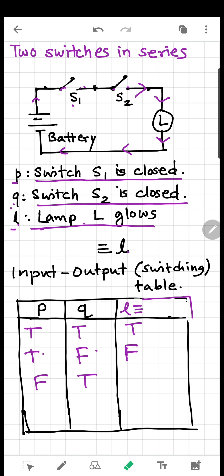Statement L is false. P false means switch S1 is not closed, and Q true means switch S2 is closed. But the current flow is blocked because S1 is open, so here the output is false.